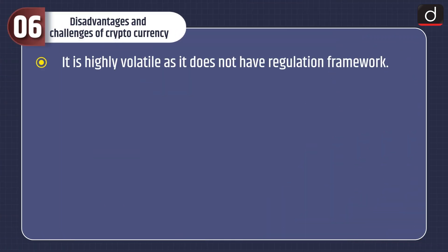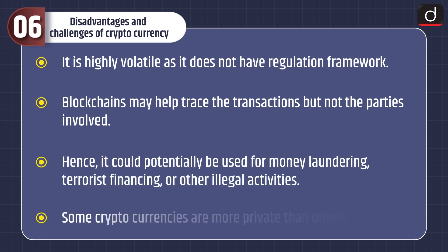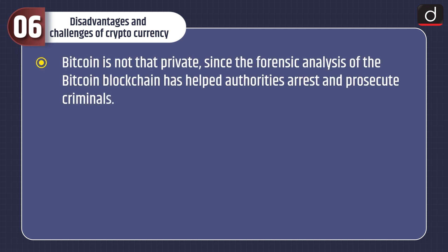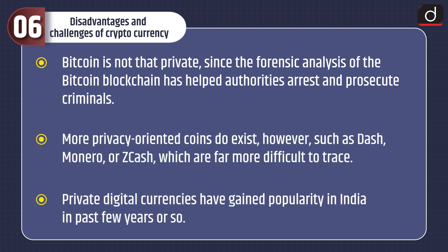Moving on to disadvantages and challenges: cryptocurrency is highly volatile as it does not have a regulation framework. Blockchains may help trace transactions but not the parties involved, so it could potentially be used for money laundering, terrorist financing, and other illegal activities. Some cryptocurrencies are more private than others — Bitcoin is not that private, since forensic analysis of the Bitcoin blockchain has helped authorities arrest and prosecute criminals. More privacy-oriented coins do exist, such as Dash, Monero, or Zcash, which are far more difficult to trace.